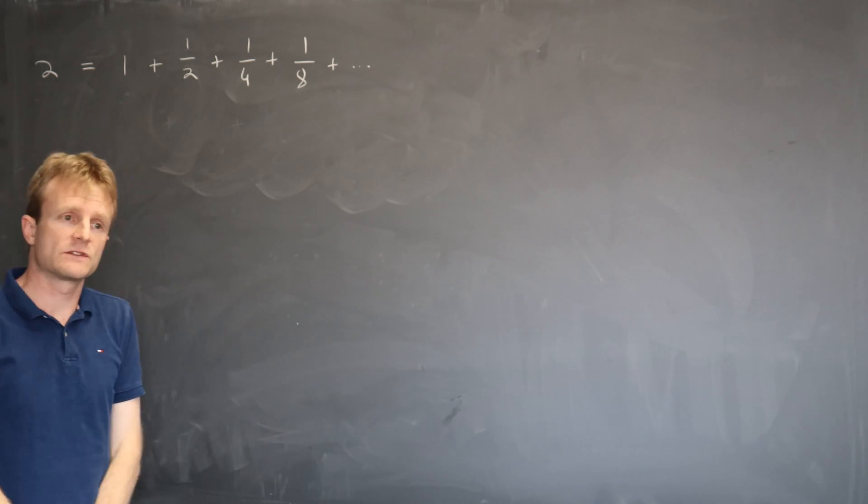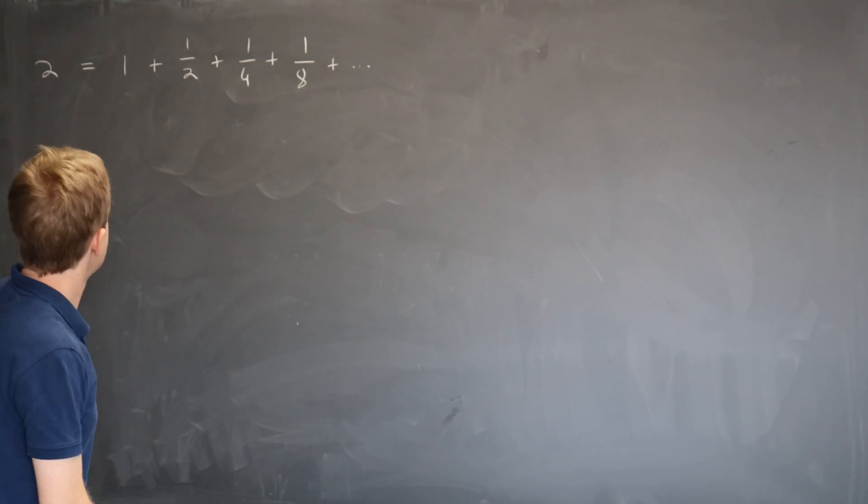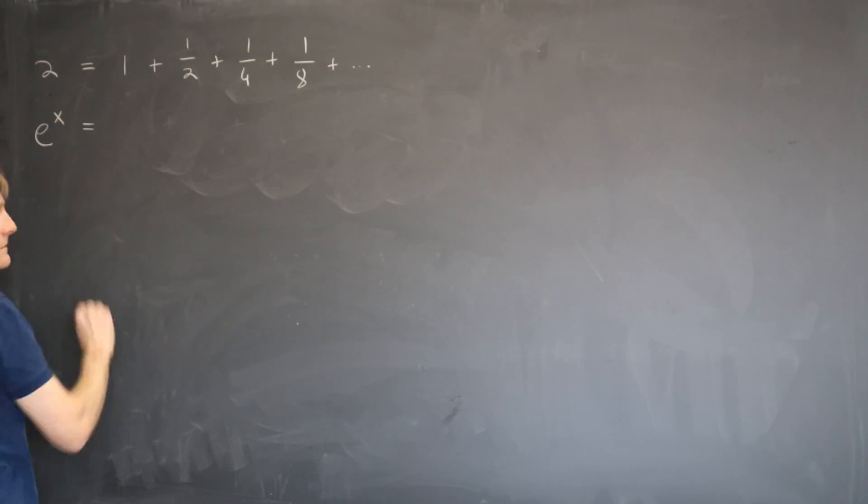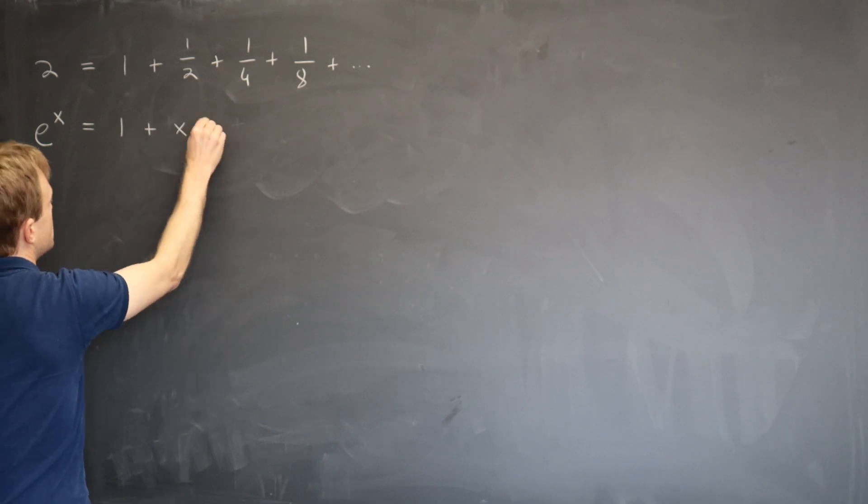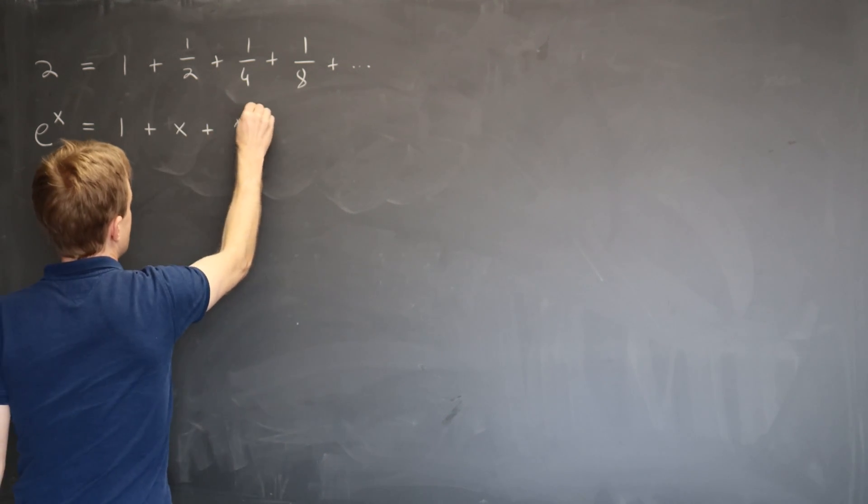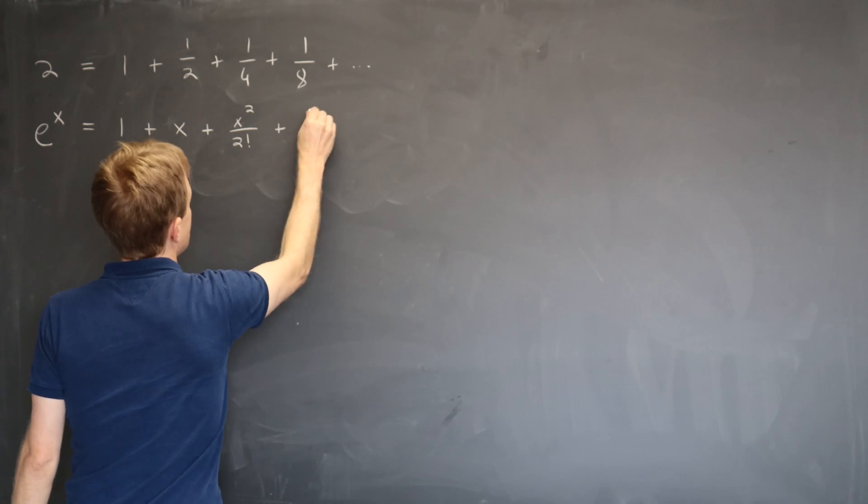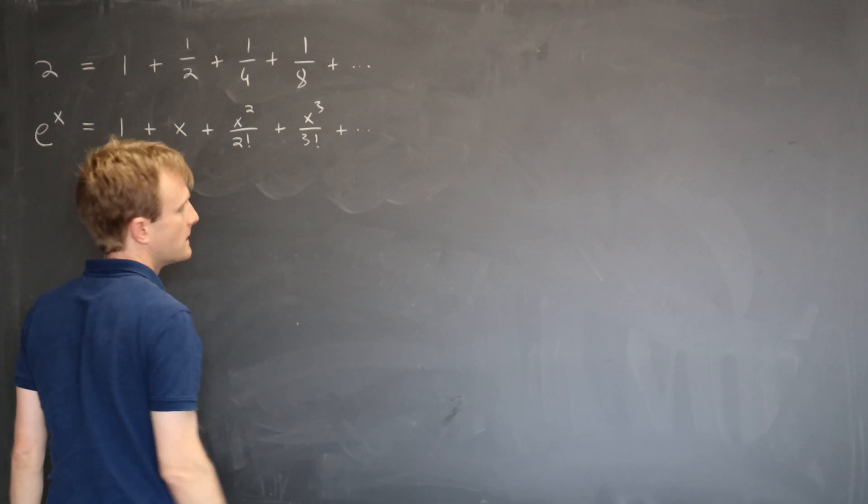But Taylor expansions gave us a method to write whole functions as series over powers of x. So for example, e to the x is given by 1 plus x plus x squared over 2 factorial, which is just 2, plus x cubed over 3 factorial, et cetera.